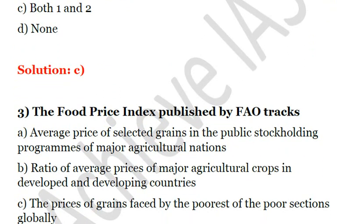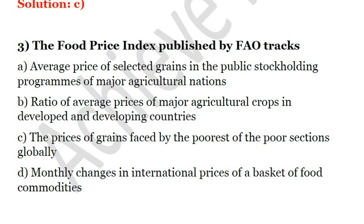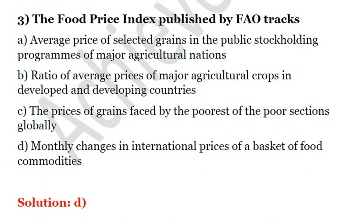Third question: The Food Price Index published by FAO (Food and Agricultural Organization) tracks: A. average price of selected grains in public stock-holding programs of major agricultural nations, B. ratio of average prices of major agricultural crops in developed and developing countries, C. prices of grains faced by the poorest sections globally, D. monthly changes in international prices of a basket of food commodities. The answer is D. Solution is D.